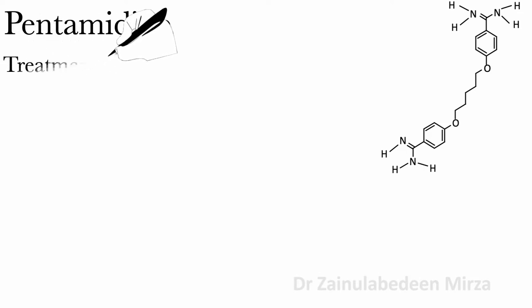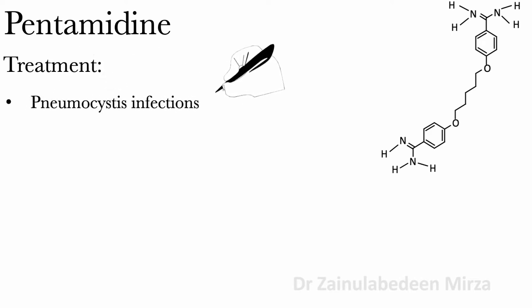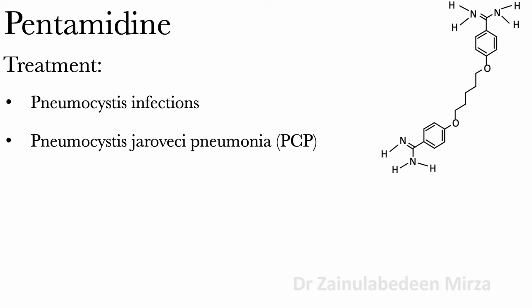Pentamidine is used to treat Pneumocystis infections in immunocompromised patients, including Pneumocystis jirovecii pneumonia (PCP) and prevention of PCP.